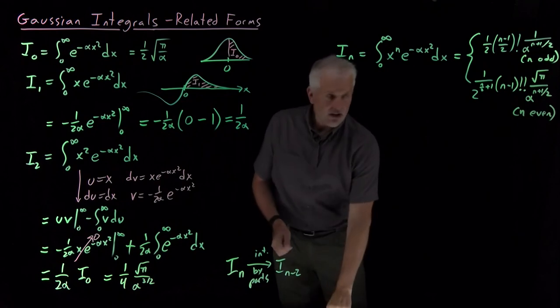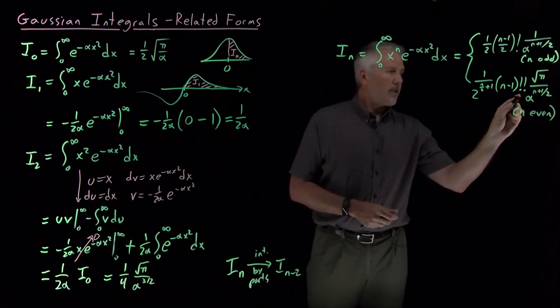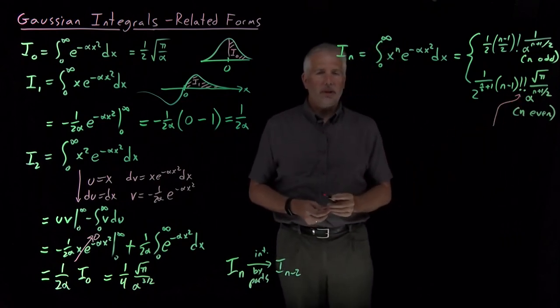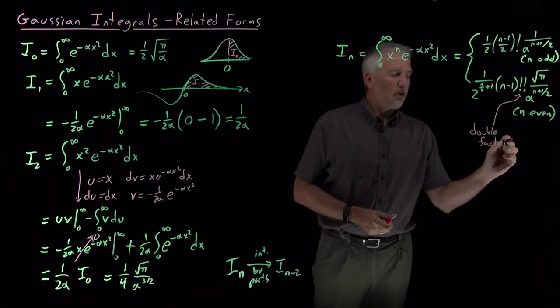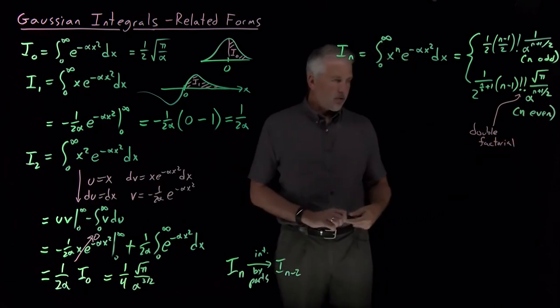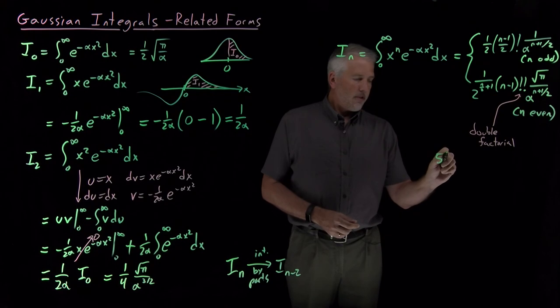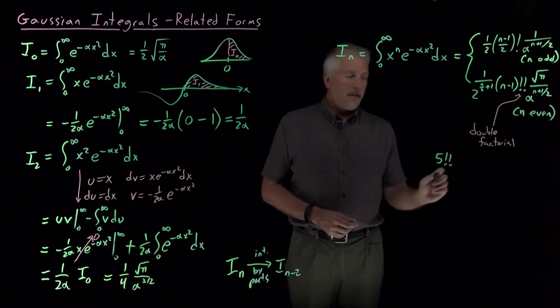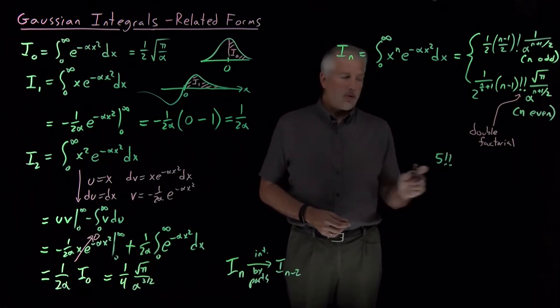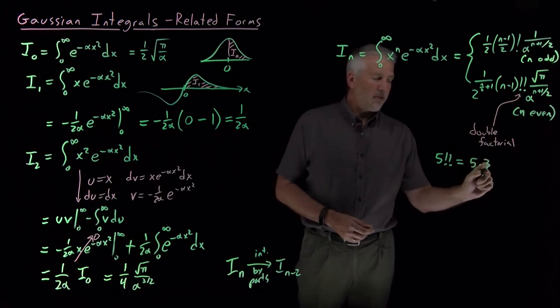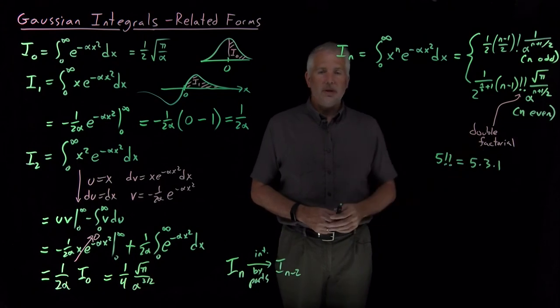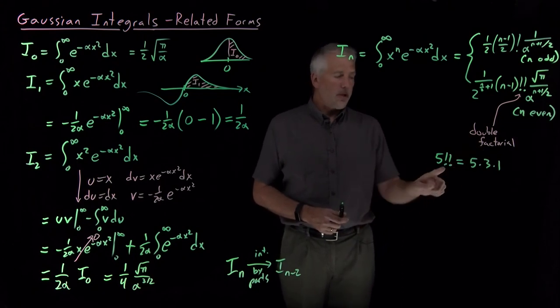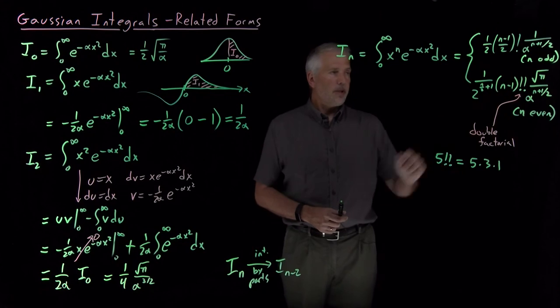And it's worth pointing out here that that's not a typo. I have intentionally written two exclamation points there. That is called a double factorial. If you've not run across one of those before, it's different than a normal factorial in that, for example, if I take 5 double factorial, that's not 5 times 4 times 3 times 2 times 1. I have to skip terms. It's 5 times 3 times 1, where I've skipped, dropping by 2 instead of just dropping by 1. So the double factorial is different than a regular factorial, so keep that in mind.